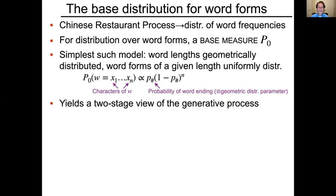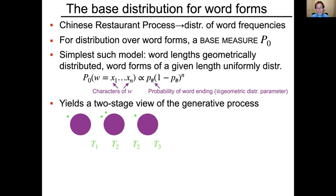This yields a two-stage view of the generative process. Walking through the incremental generation of a corpus: T here represents the word type or table in the restaurant. The first word encountered is inevitably a token of the first category. The second token might be different, becoming T2. The third token might be another instance of T2 by chance. The fourth might be an instance of a new word, and the fifth yet another new word. So we now have five word tokens and four word types. Maybe the next token is another instance of the first word, and then we get a new word.